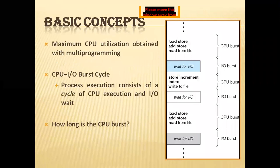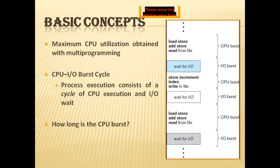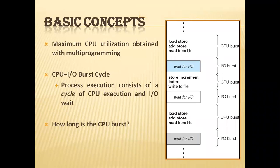Firstly, we should know what scheduling is and how the operating system schedules processes and the CPU. The basic concept is this: in a single processor system, only one process can run at a time and any other must wait until the CPU is free. The objective of multiprogramming is to have some process running at all times and to maximize CPU utilization.